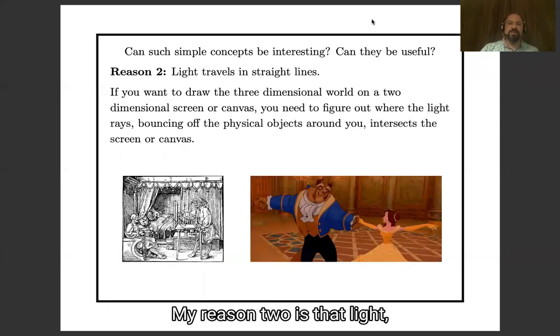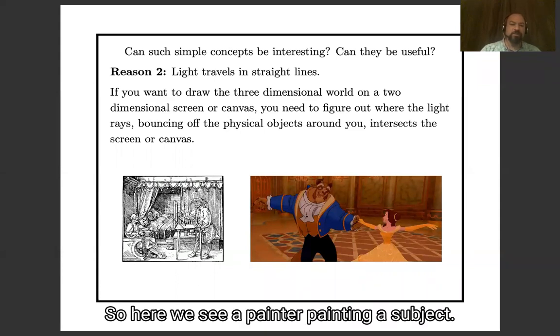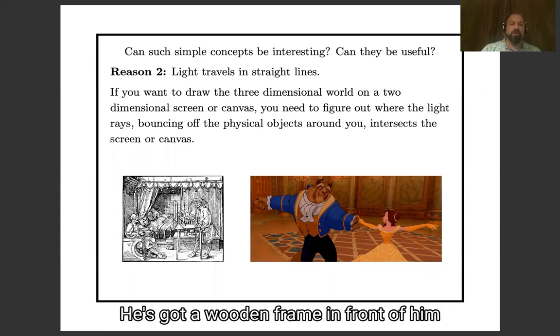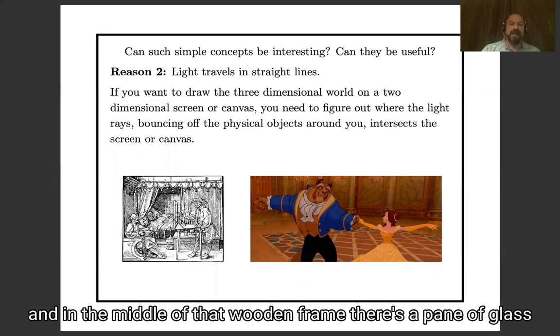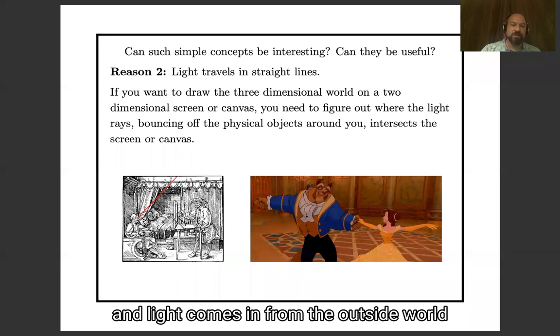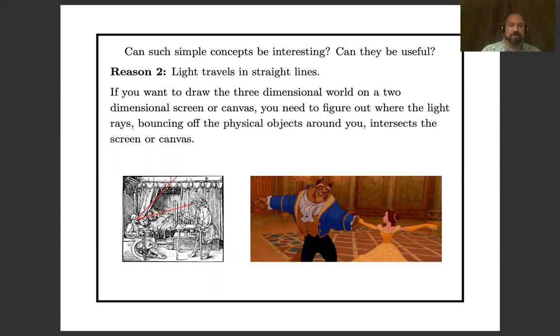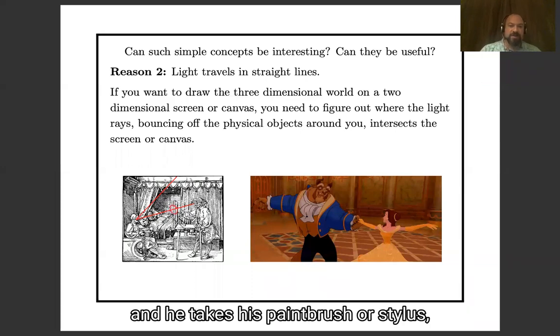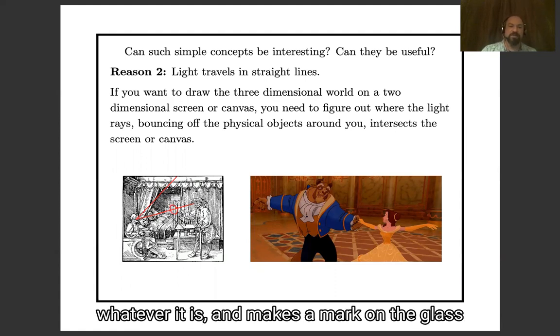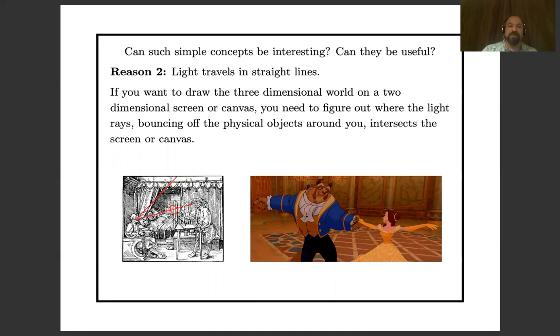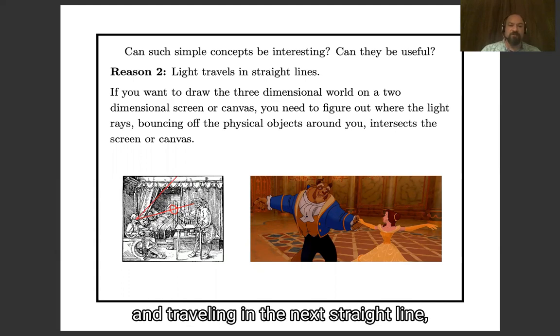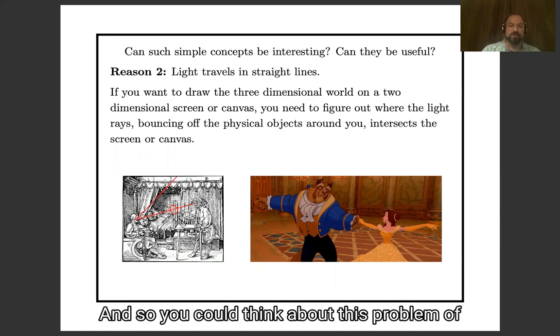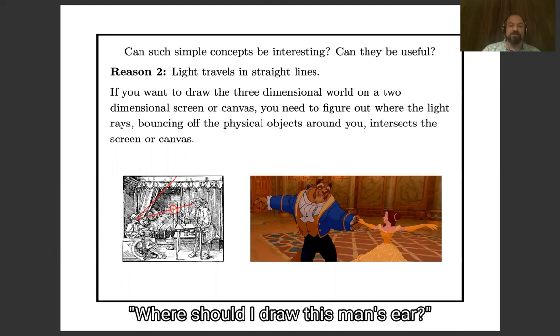My reason two is that light, the thing we all see with, travels in straight lines. So here we see a painter painting a subject. He's got a wooden frame in front of him, and in the middle of that wooden frame, there's a pane of glass. And light comes in from the outside world, and bounces off his subject, and goes back to his eye. And on its way there, the light breaks the pane of the glass. And he takes his paint brush or stylus and makes a mark on the glass where the light passes through the glass pane. So the light traveling in the straight line is a linear geometric object, and the pane of glass is a linear geometric object. And so you can think about this problem of where should I draw this man's ear as a problem of linear algebra.